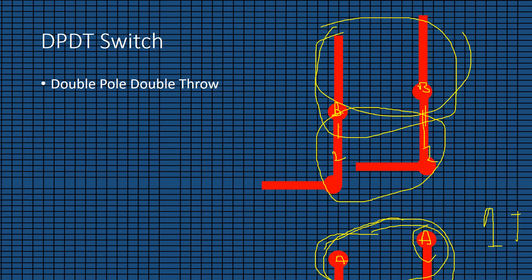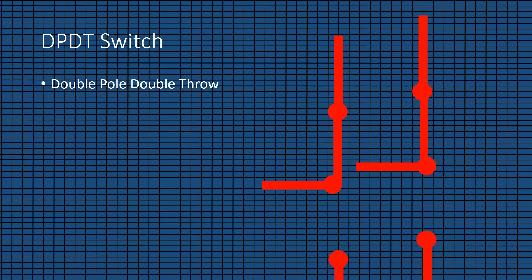These switches are used to change the direction of a motor. If you have a motor, when the poles are connected to one group of throws, the direction of the motor may be clockwise, and when the poles are connected to the other group of throws, the direction of the motor would be anticlockwise. This is all about the DPDT switch, and it covers all the types of switches.